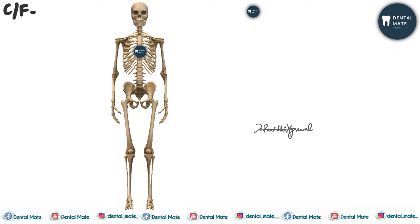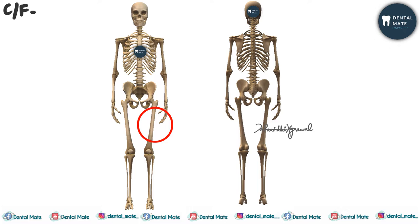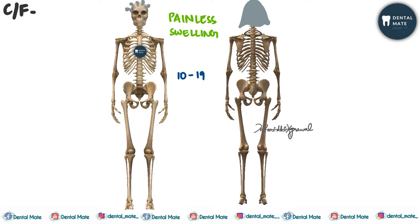In monoostotic fibrous dysplasia, the disease is limited to a single bone. The bones involved could be the rib, femur, tibia, craniofacial bones, or humerus. It is more common, has no gender predilection, is more common in the second decade of life (10 to 19 years), and presents with painless swelling on the affected area.